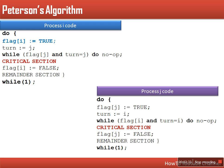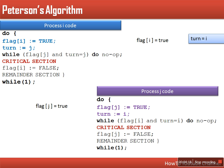We are considering one scenario. Let's say process i starts executing its code — it sets its intention flag[i] to true, indicating it wants to enter its critical section. At the same time, process j is also executing, so process j sets flag[j] to true as well. Now process i sets turn to j, and then process j also executes this instruction and sets turn to i.